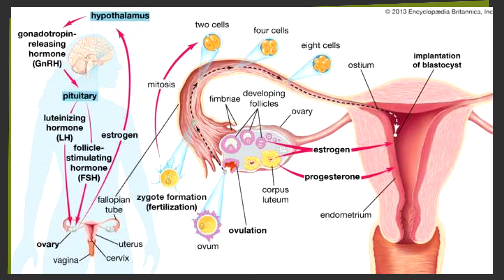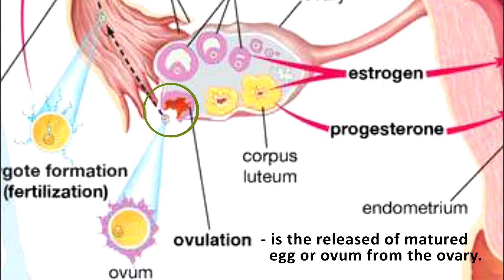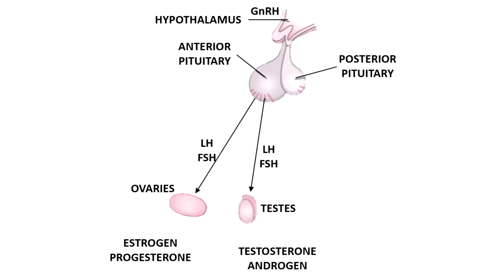On average, the ovary releases only one egg every 28 days. The release of a matured egg or ovum from the ovary is called ovulation. Hormones control many of the changes in the reproductive system, and these chemicals affect certain body organs. The monthly changes that take place in the female reproductive system are called the menstrual cycle.